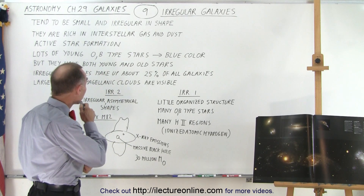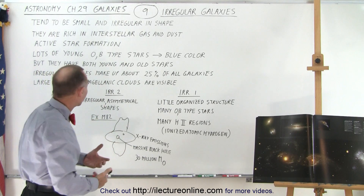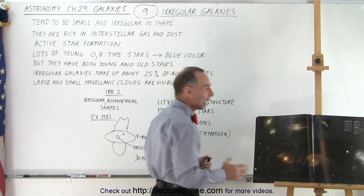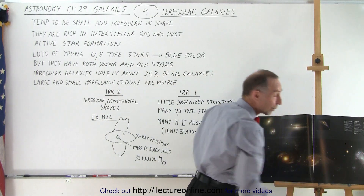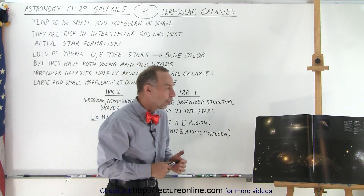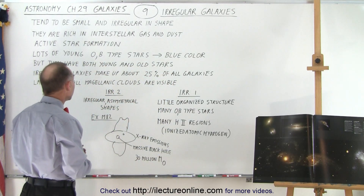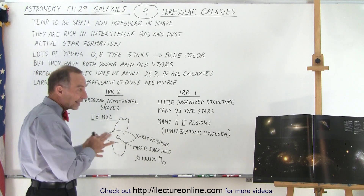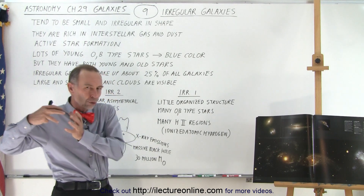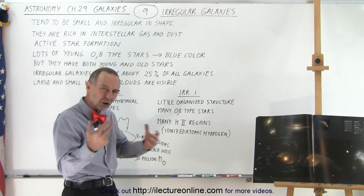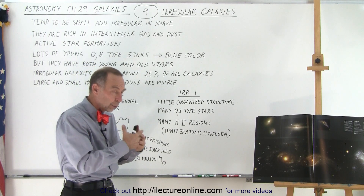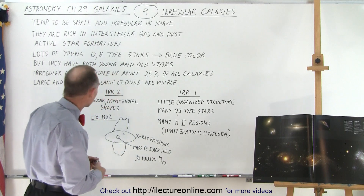They are rich in interstellar gas and dust, so there's lots of active star formation and therefore a lot of young O and B type stars. When you look at irregular galaxies you tend to see a bluish color from those young O and B type stars. They also have old stars, and since there's no distinct region for new versus old stars, they're intermingled, so you have both old and new stars mixed together in irregular galaxies.